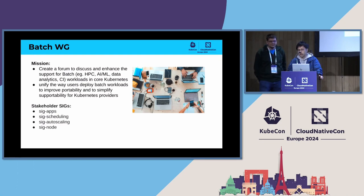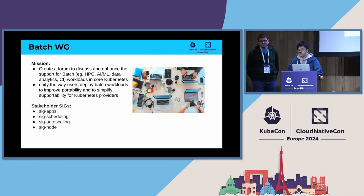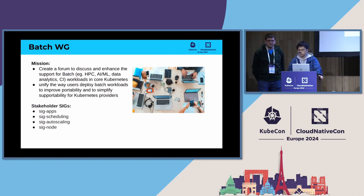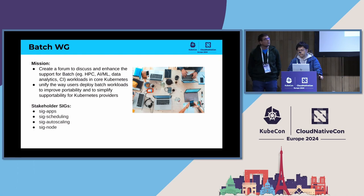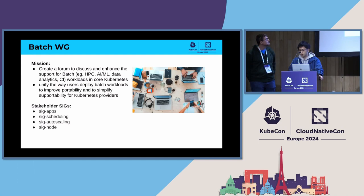I'm talking about the Working Group Batch, which is a forum to discuss enhancements to better support batch workloads. Batch might mean different things for different people, so let me give some examples. We deal with HPC, AI, ML, data analytics, and CI/CD applications. A job is a general workload that runs to completion.